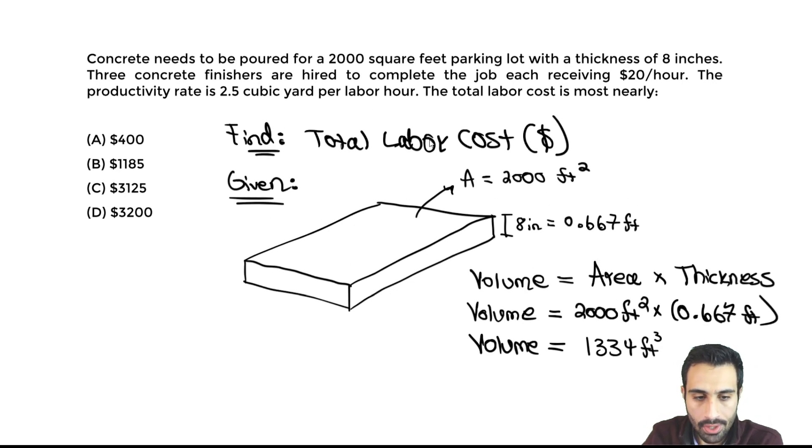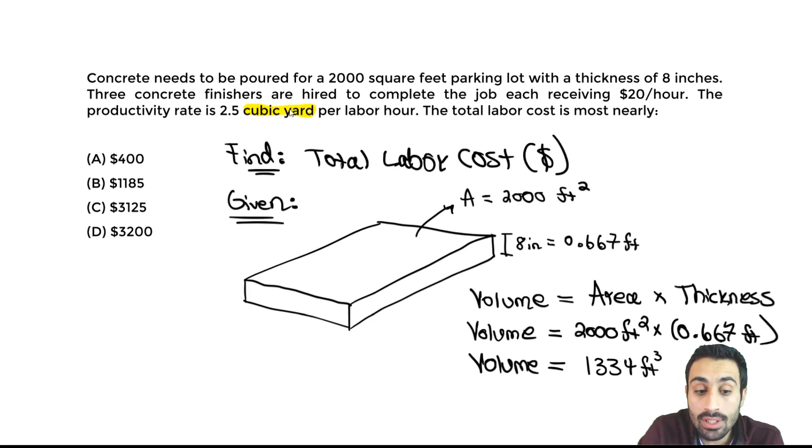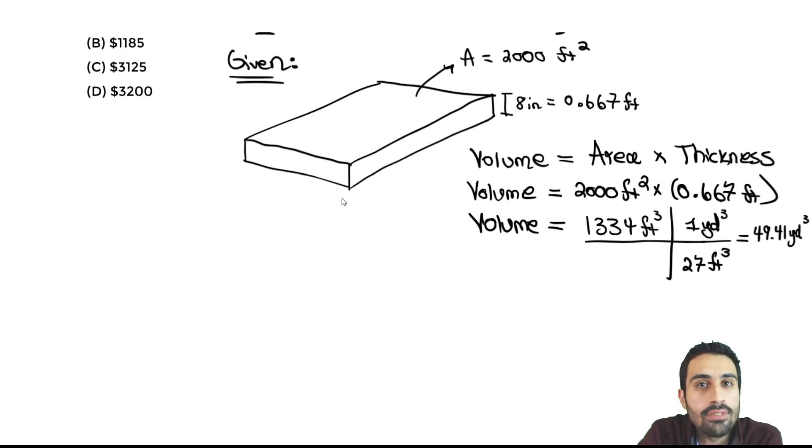Now there's another volume term thrown in the problem: cubic yard. Cubic yard is usually the volume we're dealing with for estimating, especially for construction for the civil FE exam. I can take care of this conversion and put it in cubic yards because I know I'm going to work with that productivity rate in cubic yards as volume units. This is a good conversion to know. It's also in the FE handbook on page three under unit conversions. There's 27 cubic feet in one cubic yard. I take that value divided by 27, and we get about 49.4. I'll round it to 49 cubic yards.